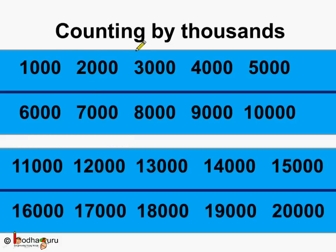See — thousand, two thousand, three thousand, four thousand, five thousand, six thousand, seven thousand, eight thousand, nine thousand, ten thousand — and we can also continue it further: eleven thousand, twelve thousand, thirteen thousand, fourteen thousand, fifteen thousand, sixteen thousand, seventeen thousand, eighteen thousand, nineteen thousand, twenty thousand, and so on.